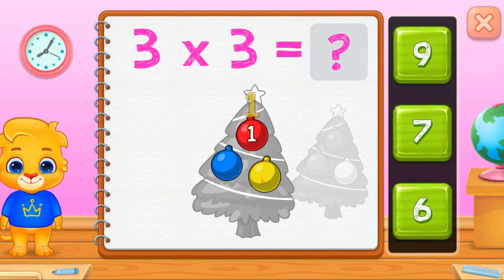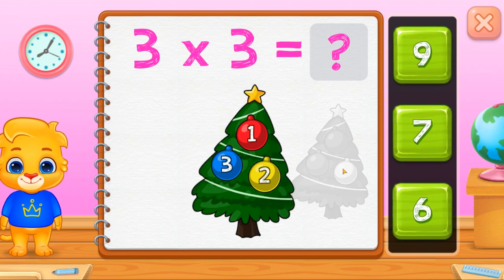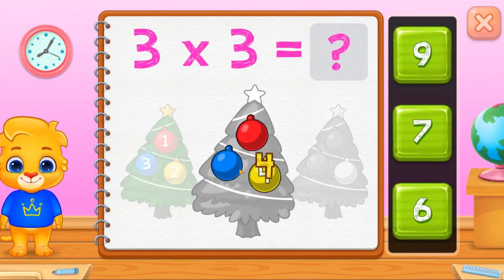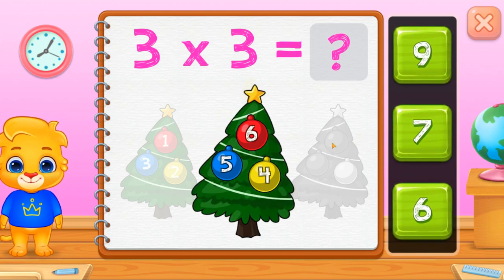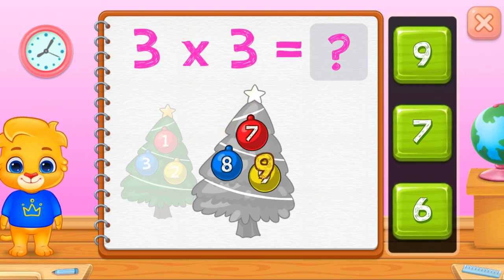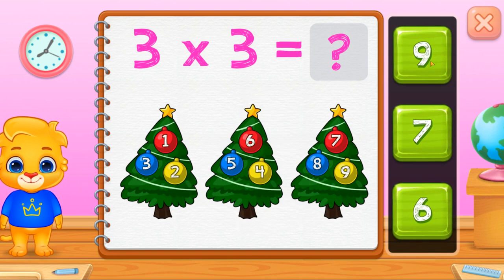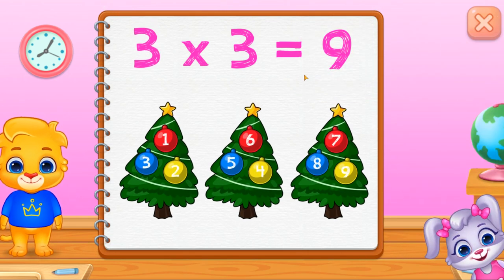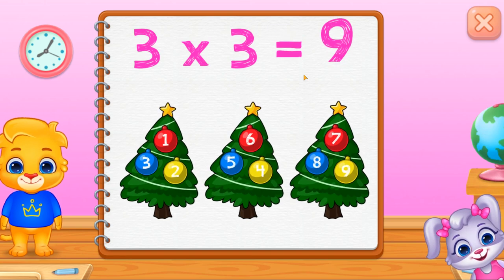One, two, three. Three, four, five, six, seven, eight, nine. Three times three equals nine.